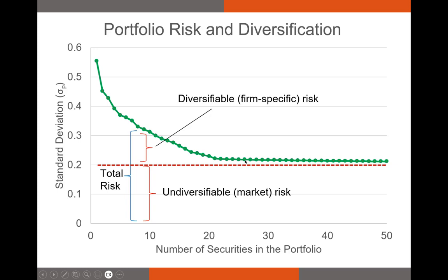Once you get to about 20 to 25 different securities, your portfolio is pretty well diversified — adding one more security won't decrease volatility by much. The area above the red line represents firm-specific or diversifiable risk, like the risk of a Chipotle E. coli outbreak — the risk we eliminate through diversification. Everything below the red line is market risk, the risk we cannot diversify away. We can do things to reduce it, but reducing it also reduces our return.